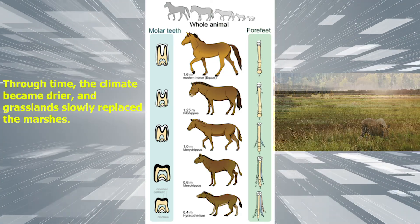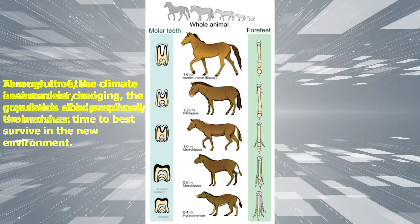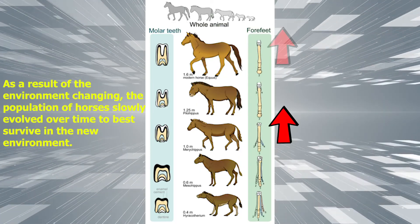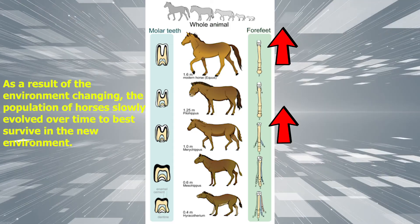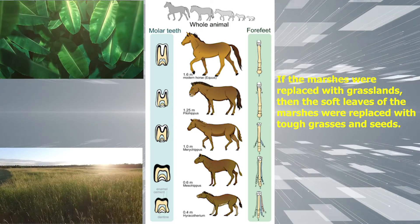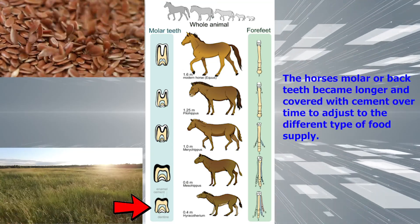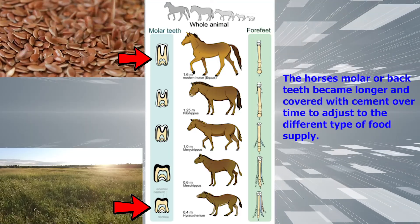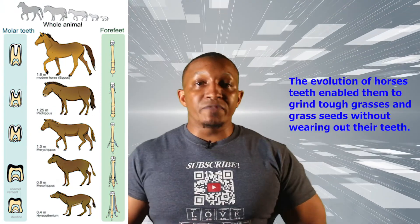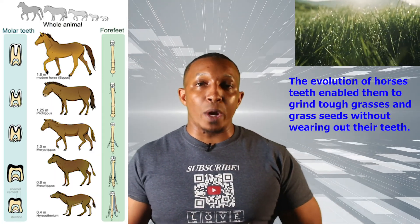Through time, the climate became drier and grasslands slowly replaced the marshes. As a result of the environment changing, the population of horses slowly evolved over time to best survive in the new environment. The soft leaves of the marshes were replaced with tough grasses and seeds. Their molar or back teeth became longer and covered with cement over time to adjust to the different type of food supply. This evolution of their teeth enabled horses to grind tough grasses and grass seeds without wearing out their teeth.